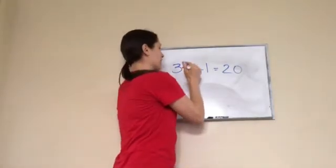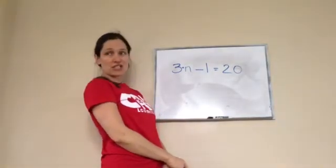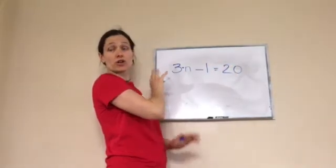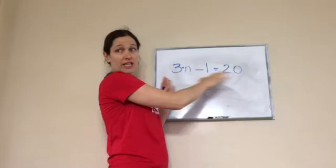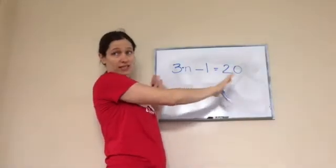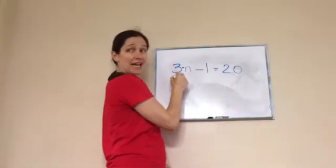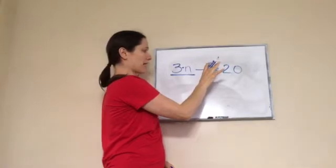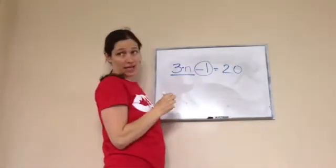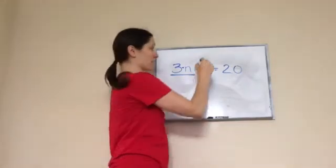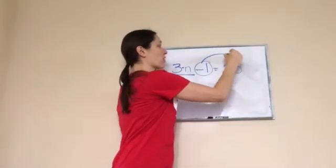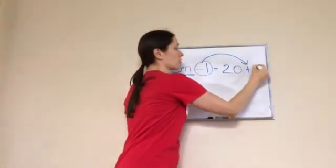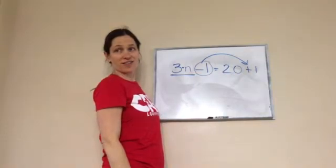Now I'm going to put the n back there for just a minute. 3 times n minus 1 equals 20. Whenever you see this problem, I'm going to teach you a trick that's going to work for the rest of your life. You're going to take the part that has the letter you're looking for and underline it. This, we need to get out of the way. Guess what happens when you move it across the equal sign? It changes from minus 1 to plus 1.